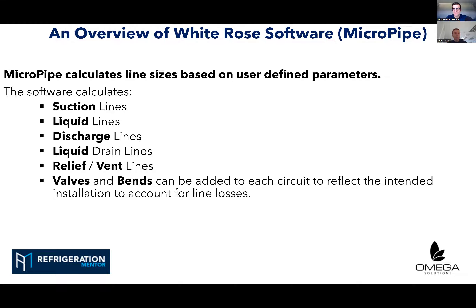The software works on a basis of user-defined parameters — if you put garbage in, you get garbage out; good things in, you get good results out. The software calculates suction, liquid, discharge, liquid drain, relief, and vent lines. For every single circuit, we can add vents, valves, and bends. Effectively, we can mimic a real-life installation and account for those small line losses that can accumulate to quite a big loss overall in a large distributed system.